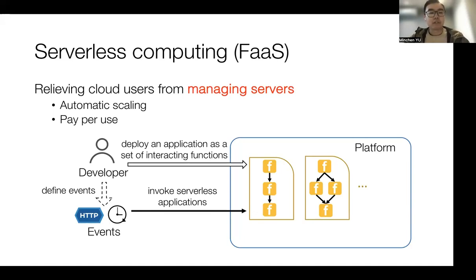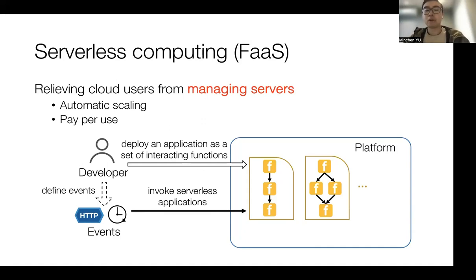For example, the developer can deploy their application as a set of interacting functions and define the events that can trigger their execution. Once the serverless platform receives the events, it will invoke the functions and scale the number of function instances to handle the dynamic workloads.